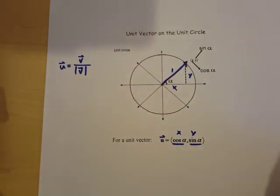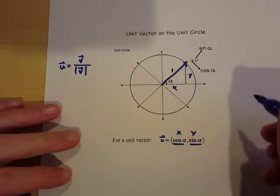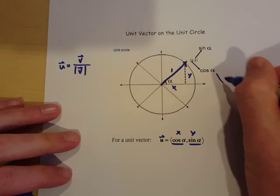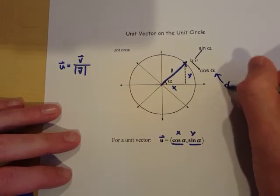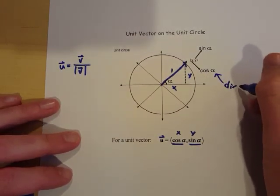Now this alpha here can be any variable you want, but that alpha indicates the direction angle of this vector. And we're gonna talk a lot more about direction angles as we go along in this unit.